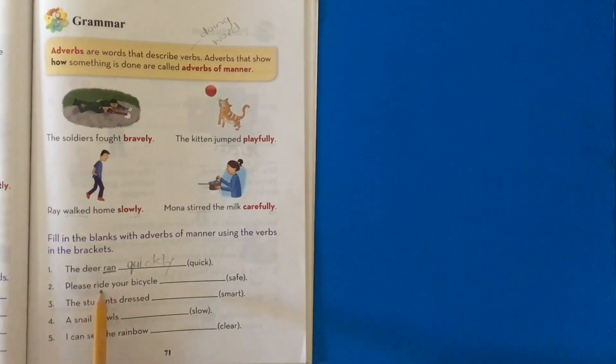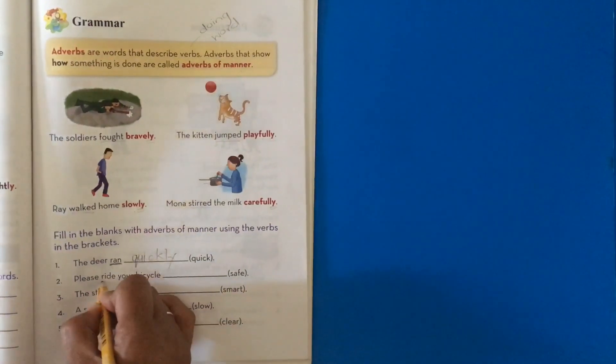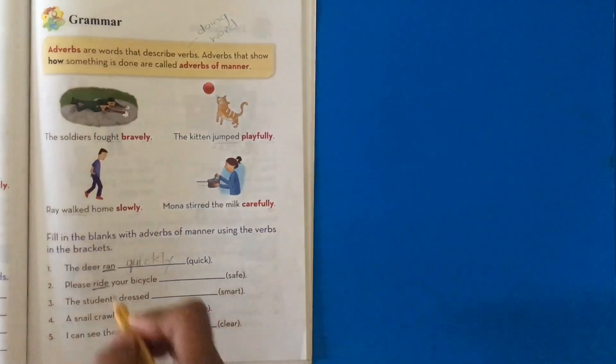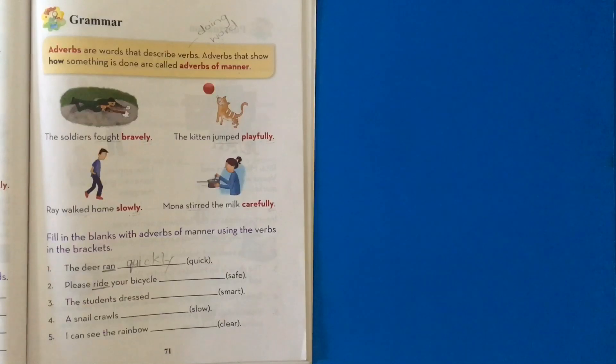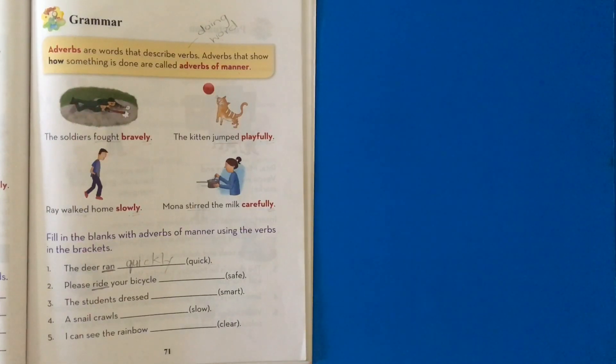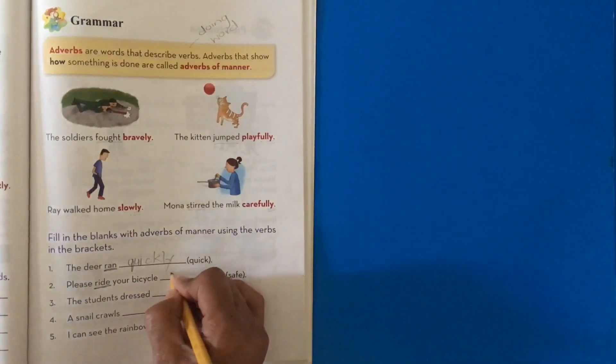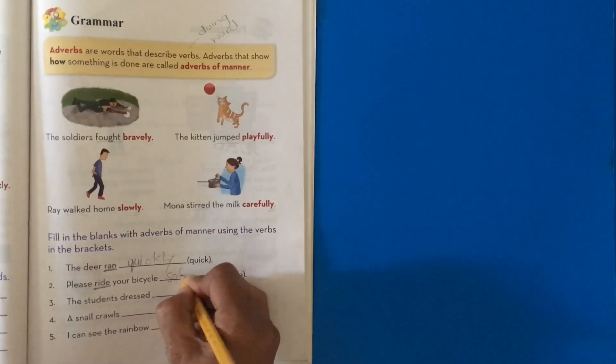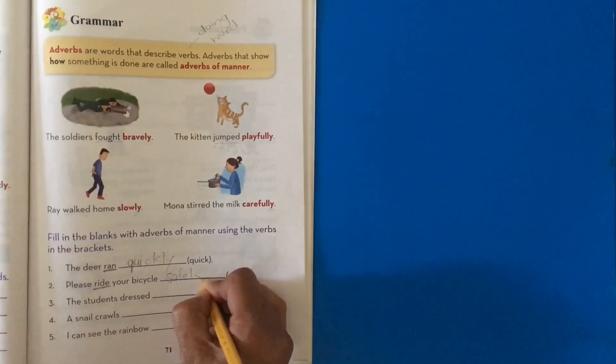Please ride your bicycle. The verb is ride. Very good. So, let's underline ride. Please ride your bicycle safe. Is that correct? No. What's the formula? Safe plus Y.